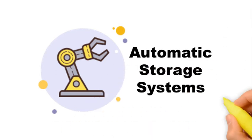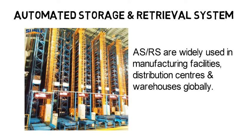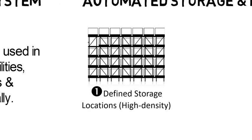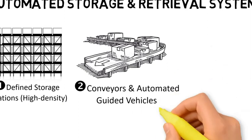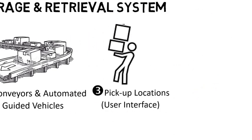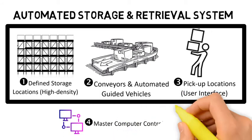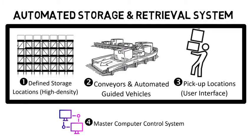Finally, we come to automatic storage systems, also known as goods-to-man systems, which are electrically powered and utilize robotics and advanced computing algorithms to achieve optimum efficiency. First up, we have the Automated Storage and Retrieval System, also known as ASRS. ASRS are widely used in manufacturing facilities, distribution centres, and warehouses globally. There are typically four components in an ASRS: high-density storage with defined locations; conveyors and automatic guided vehicles such as cranes or shuttles moving along the storage aisles for put-away and retrieval; a user interface where warehouse workers can pick up or input goods; and most importantly, a master computer control system which controls the movement of cranes or shuttles and determines storage locations based on defined algorithms. For example, frequently picked goods are stored nearer to the user interface to ensure they can be picked faster. After each storage and retrieval, the master control system updates the inventory to ensure accuracy at all times.